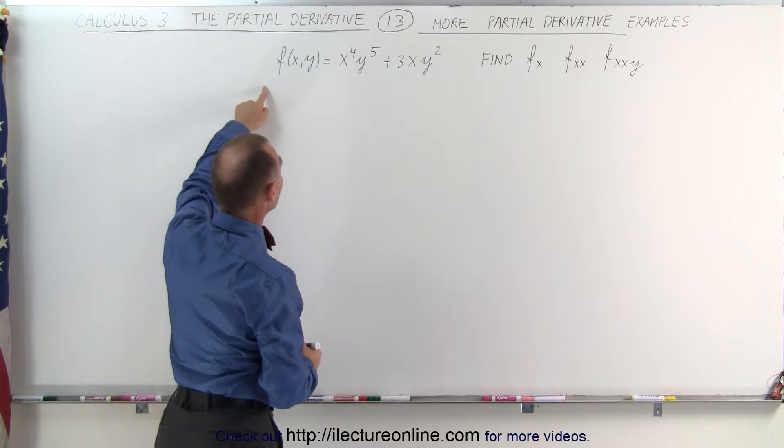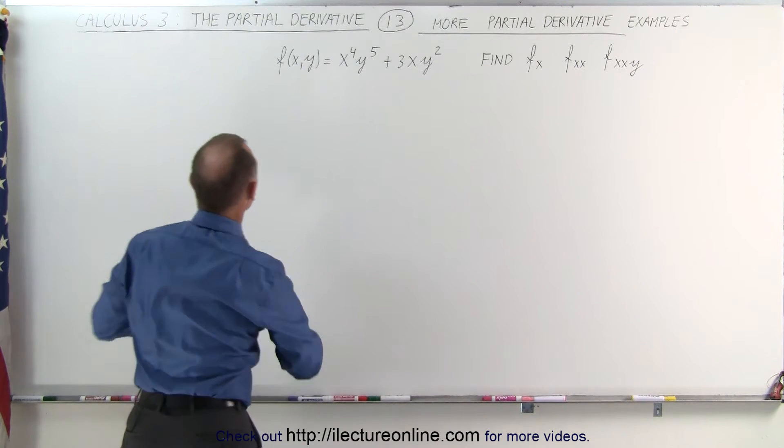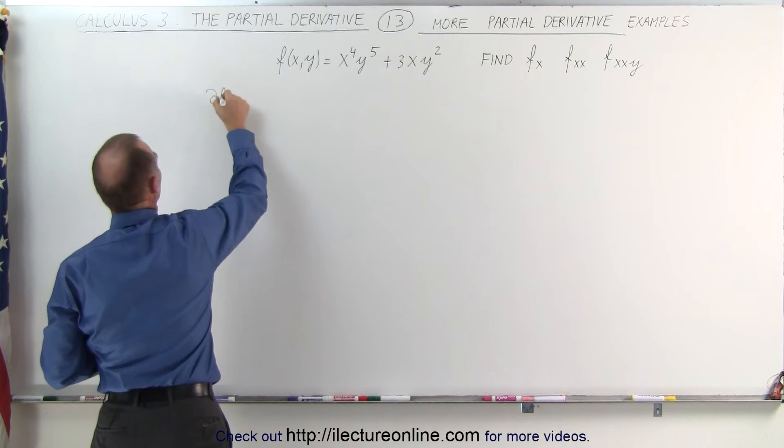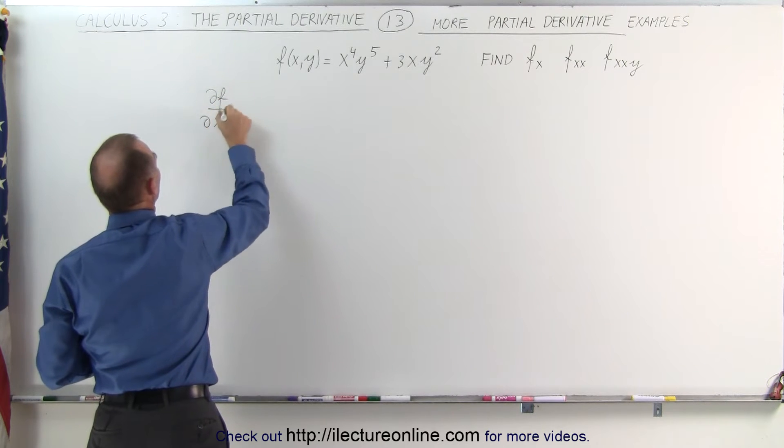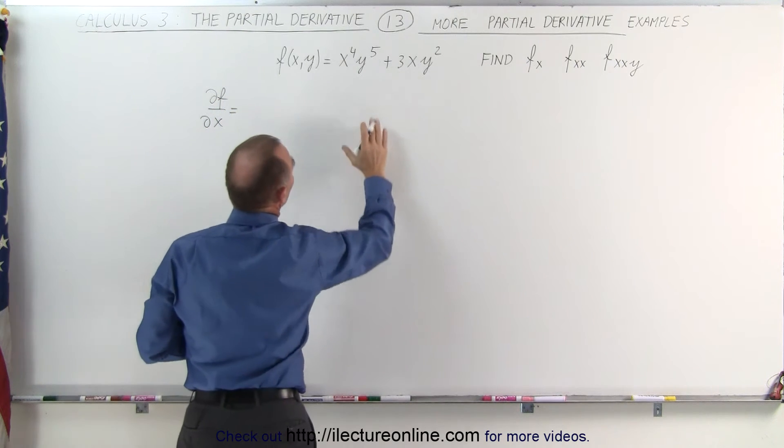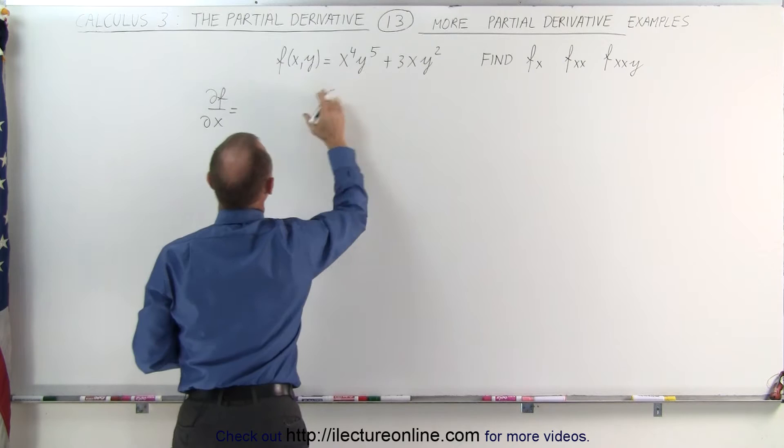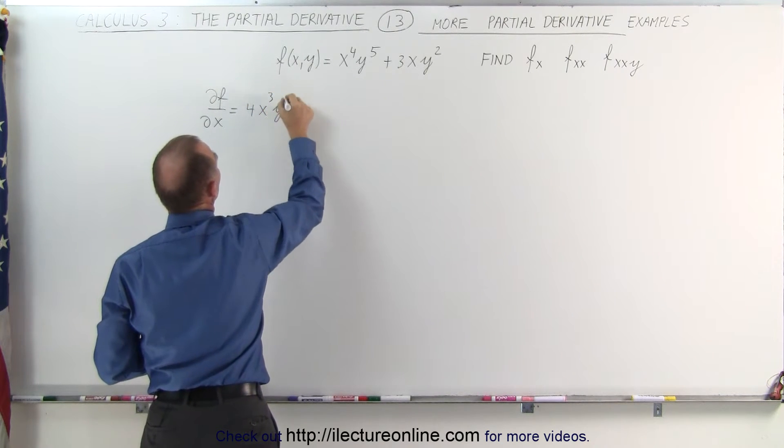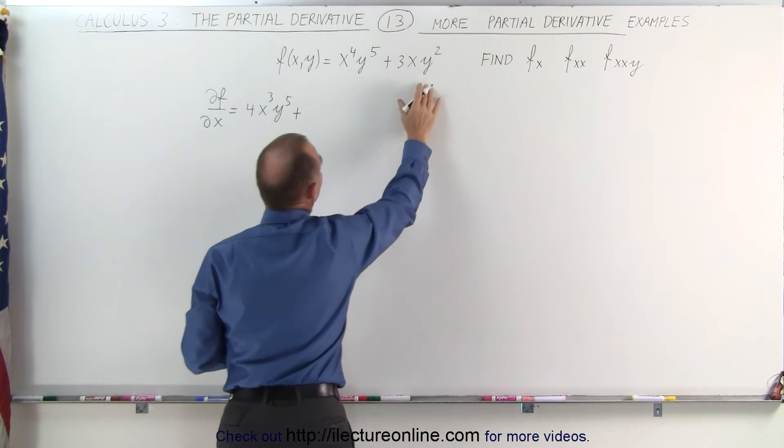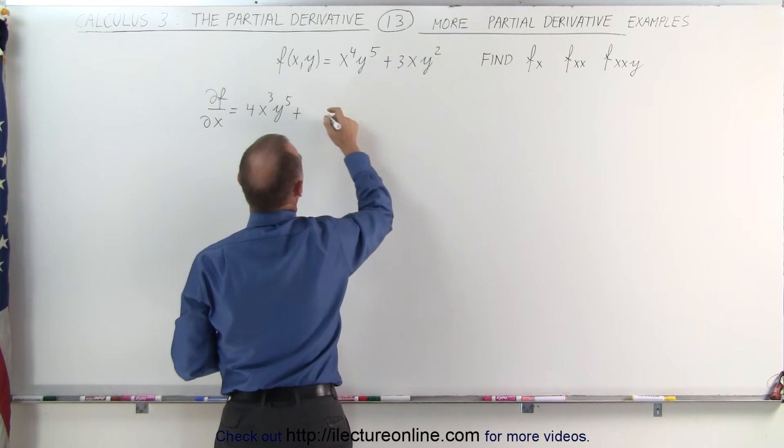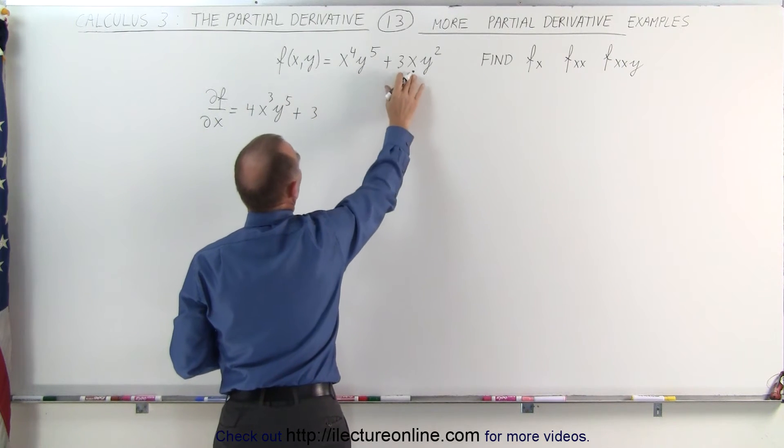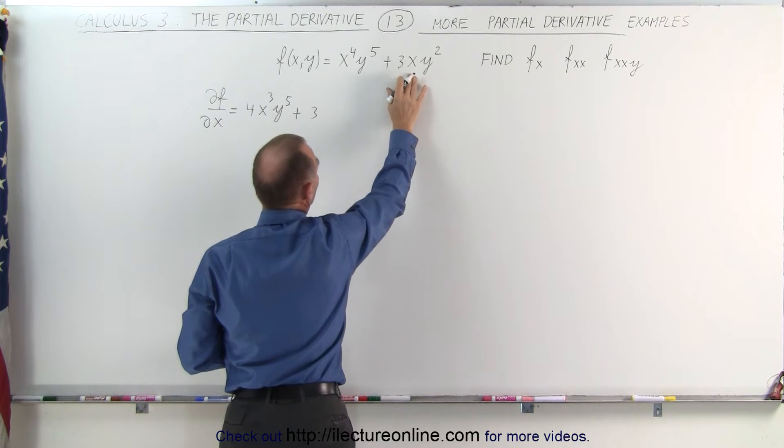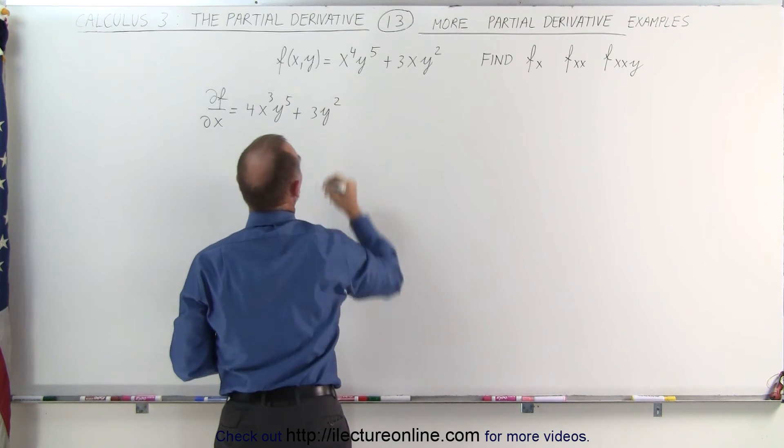So first, we're going to take the partial derivative of the function with respect to x. The partial of the function with respect to x is equal to... Notice that y to the fifth will become a constant. This becomes 4x³y⁵, plus, and here again, y² will become a constant. It would be plus 3, the derivative of x with respect to x is simply 1, so we get 3y².